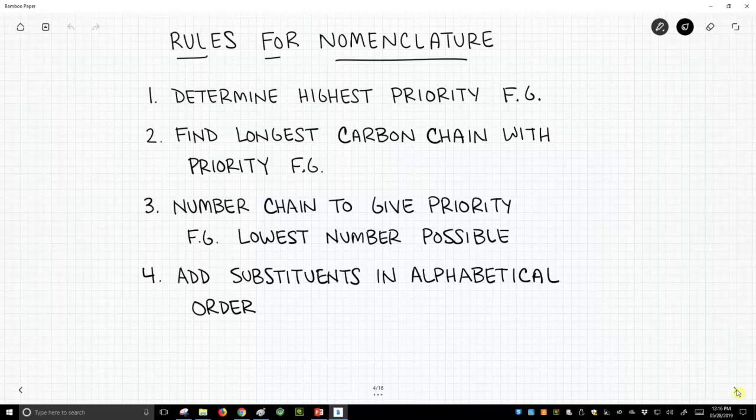So we want to give it as low a number as possible, and at that point, we simply add the substituents that are also off the chain, other potential functional groups, and we'll just list them in alphabetical order off of our name.